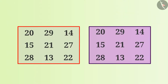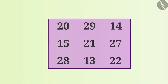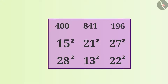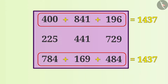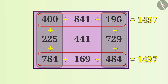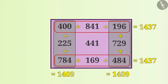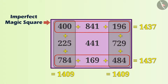Now let me show you one more magic in this square. I will write the square of the number in each cell. In this square, the end row sums and end column sums are equal, so this is the imperfect magic square of the new variety. This solves the puzzle of finding numbers that can be expressed as the sum of three squares in two different ways.